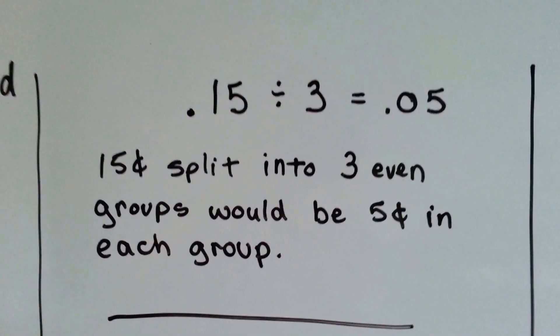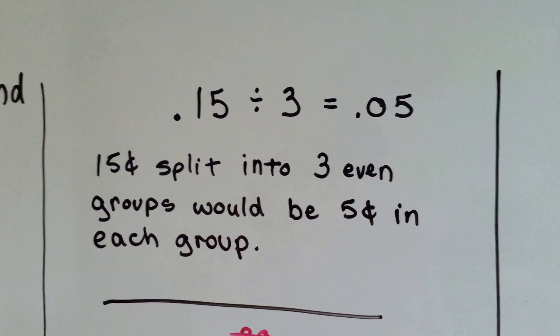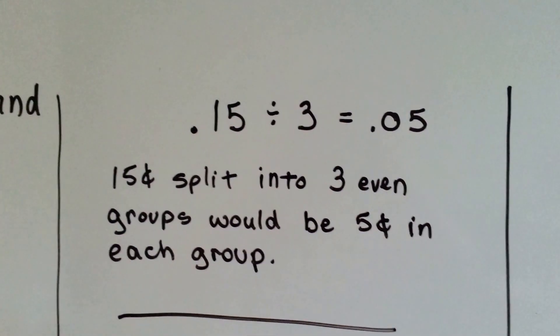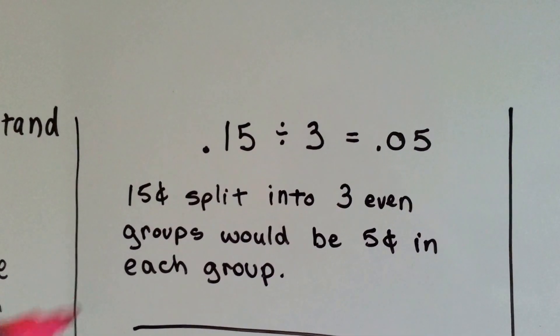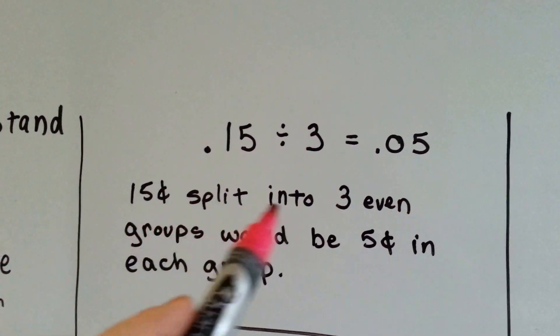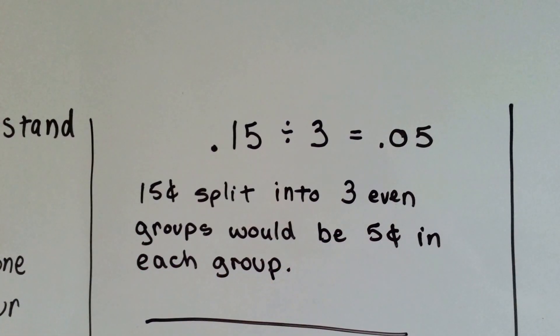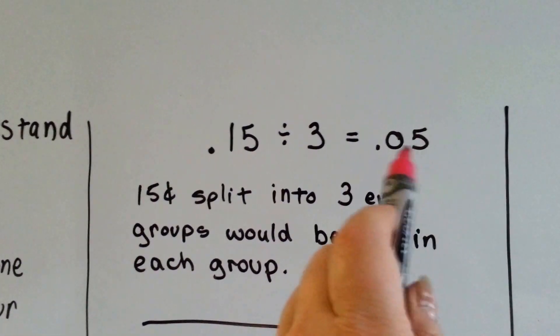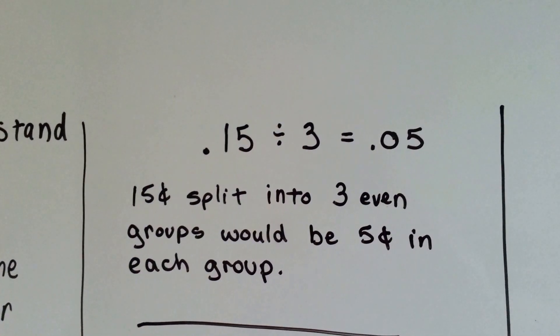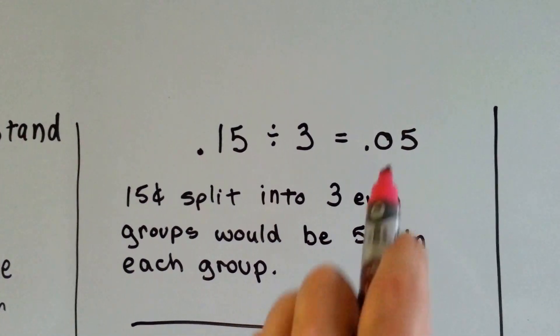If we had 0.15 and we wanted to divide it by 3, it would equal 0.05. Why? Because if we had 15 cents and we split it evenly between three people, each person would get 5 cents. And that's how you write five cents. There's five pennies out of a hundred in the dollar.